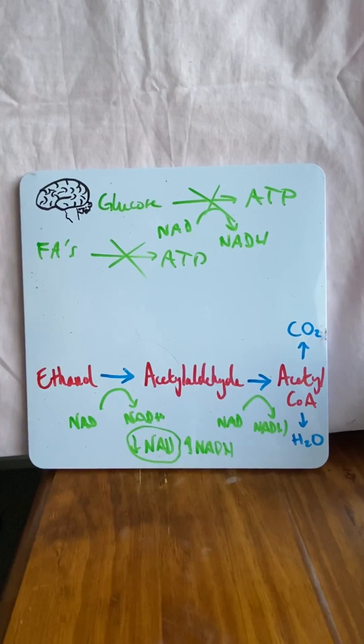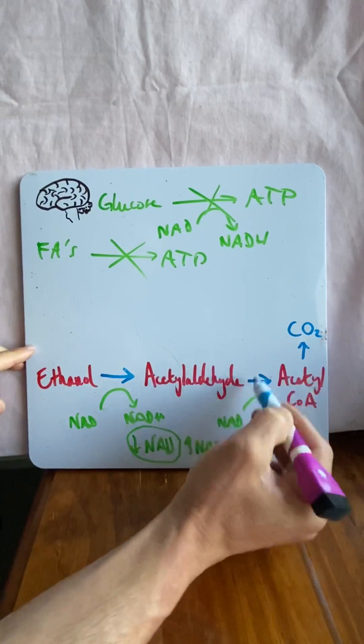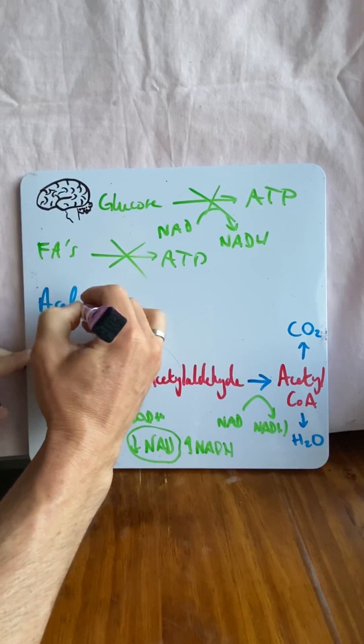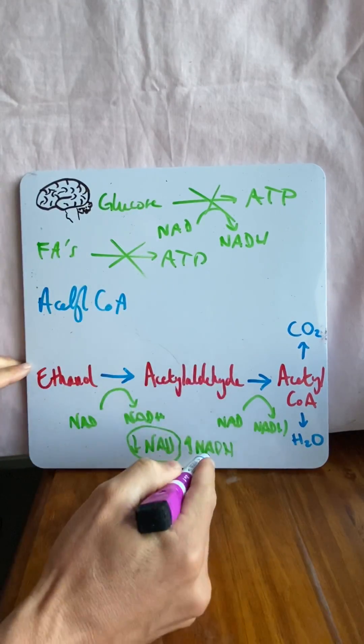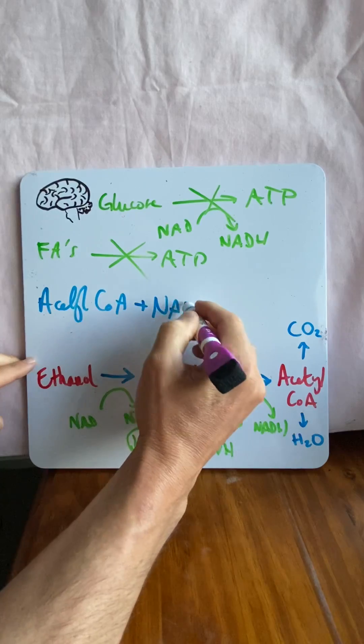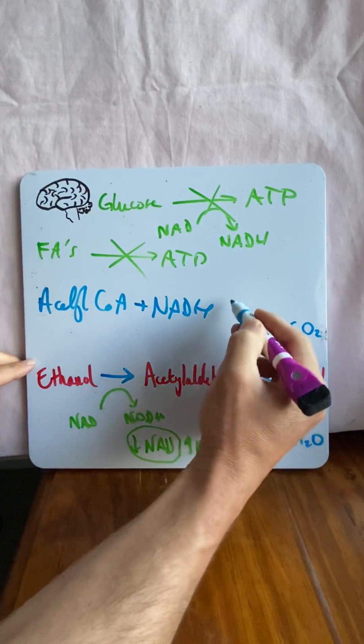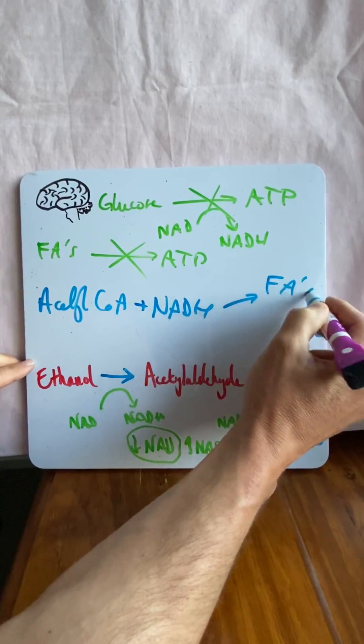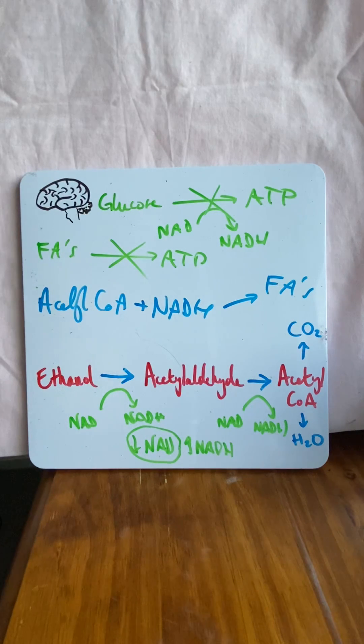Now what actually happens is this. Because you've got high levels of acetyl-CoA from the alcohol metabolism and high levels of NADH, we produce fatty acids. And so what happens at the end of the day is you produce and store fatty acids, not use them.